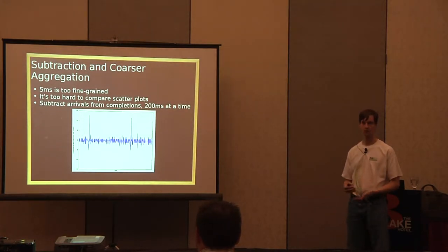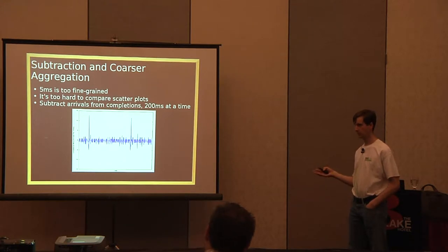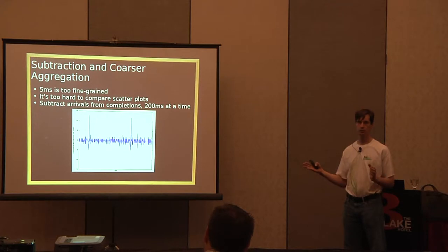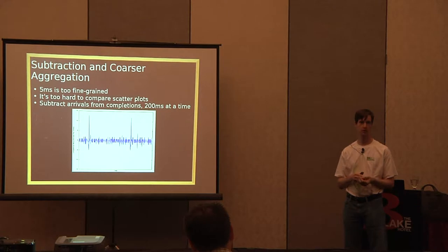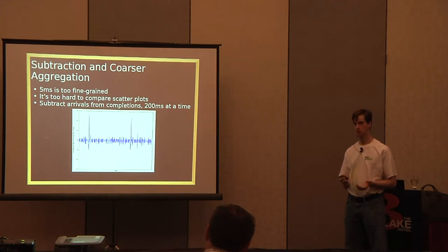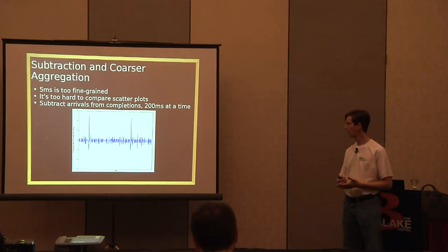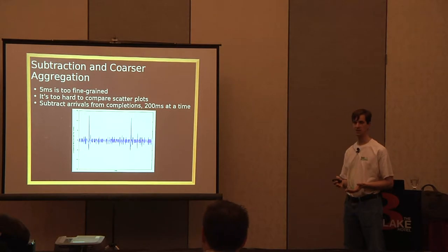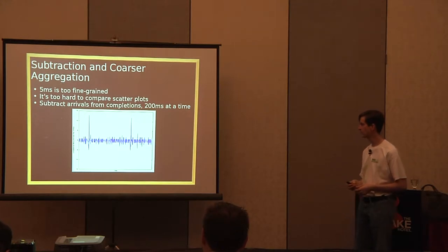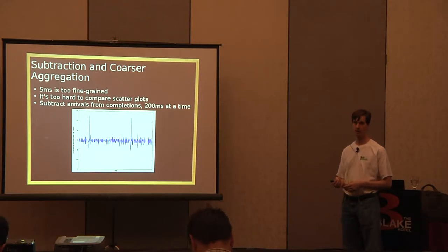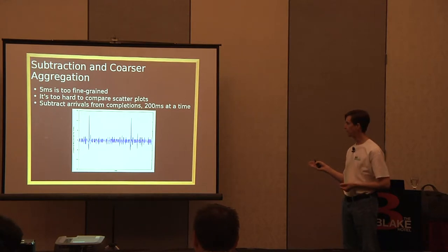Maybe if we subtract arrivals from completions, we can see a pattern. And indeed, that does pull out spikes. Five milliseconds is too fine-grained — if you make the aggregation interval too small, you will get all spikes. Most queries on this system respond in 200 microseconds, so five milliseconds is not abnormally long. I chose 200 milliseconds, which means five buckets per second. We can see that this pulls out two spikes in this data very clearly. There's a heuristic for choosing the aggregation interval explained in the accompanying white paper on Percona's website — it's not just completely random.